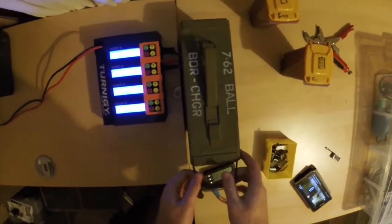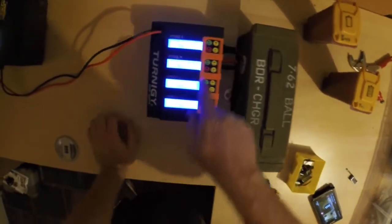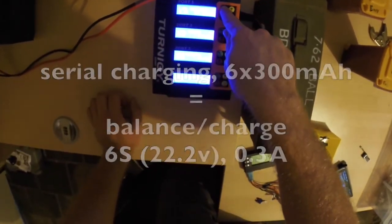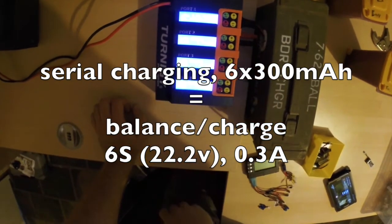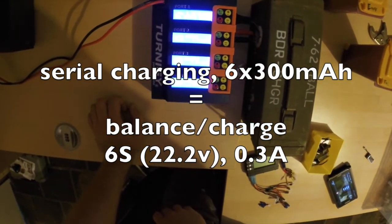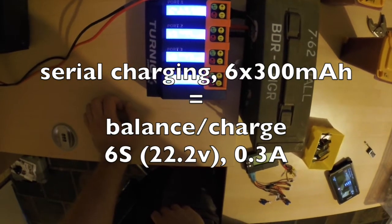That means I have to configure my charger to balance charge a 6 cell 300 milliamp pack and I'm going to charge it at 1C at 0.3 amps.